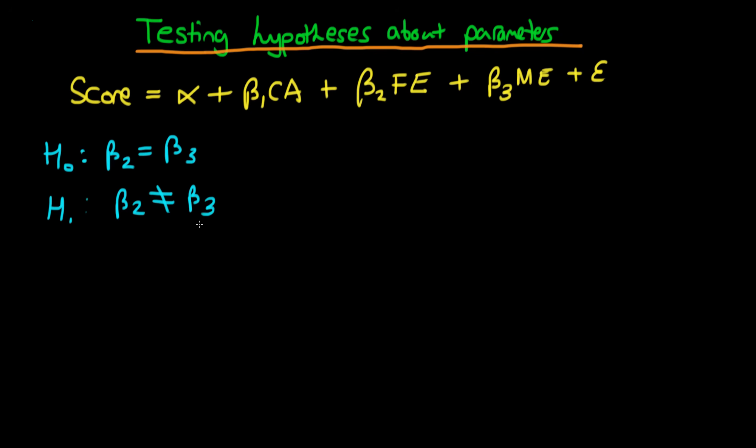How do we go about testing this? Remember when we were testing whether a parameter equals a certain value - if we were testing whether β₂ equals 1, the t-statistic we formed was our least squares estimate β̂₂ minus the number we're testing against, 1, divided by the standard error of β̂₂.